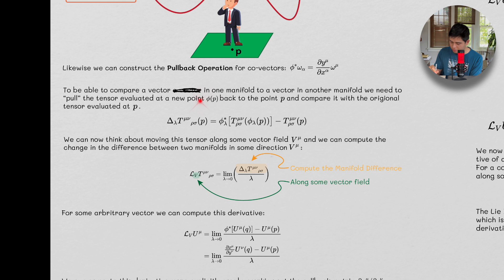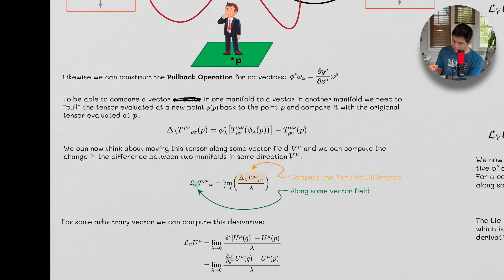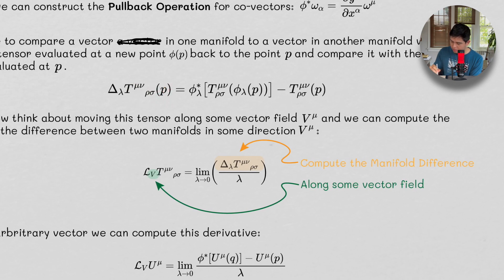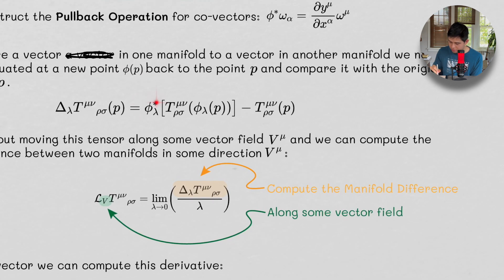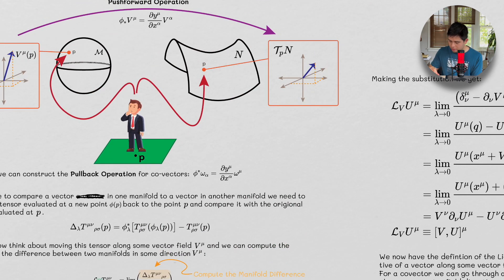So the new point is at P, but this is a new coordinate transformation at P. So here's what we're doing. We have a tensor at P, and we're pulling back the tensor evaluated at the new point P back to the original point. This is a pullback of this tensor, and we're comparing it with the tensor at P.